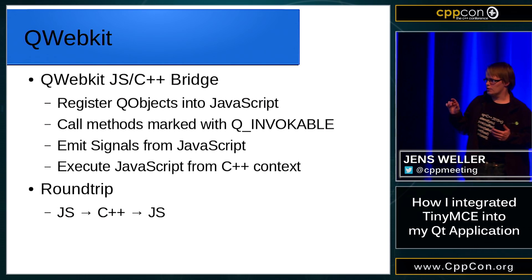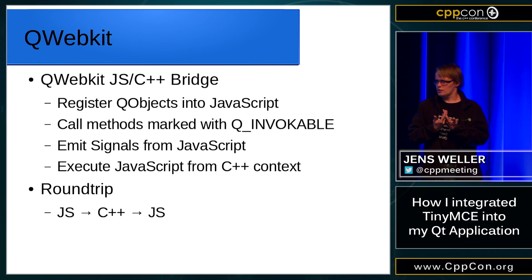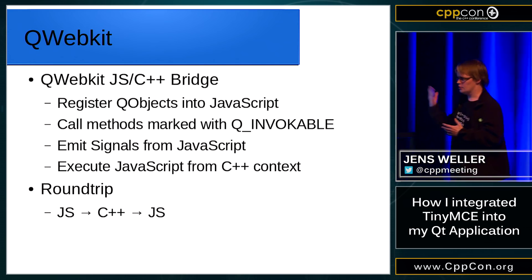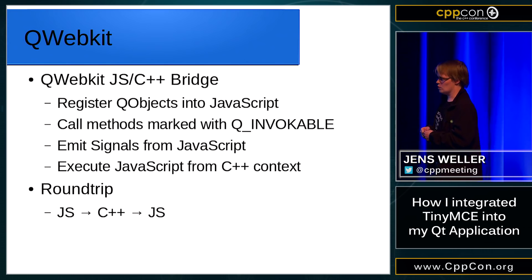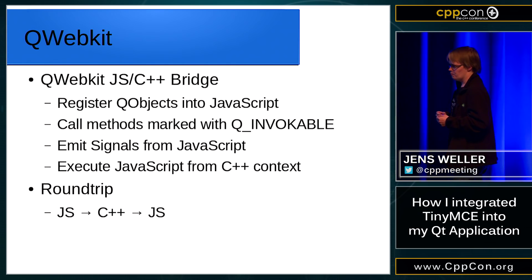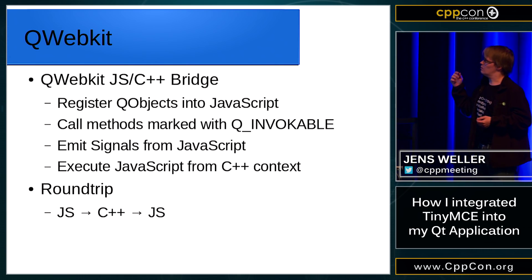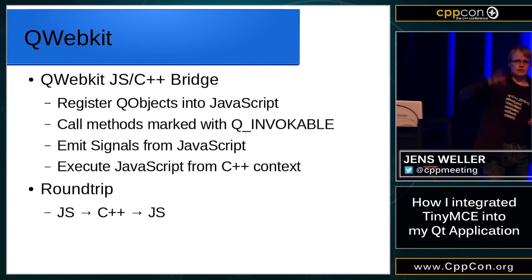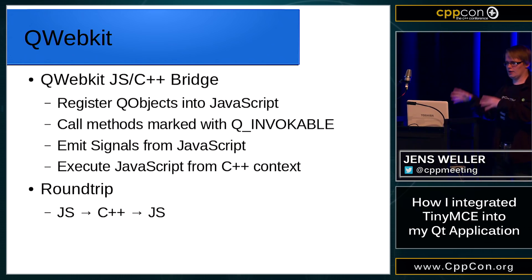From the QWebKit side, I can easily register the C++ object wrapping the editor into JavaScript. I can call methods into C++ that are marked with Q_INVOKABLE, or I can emit a signal from JavaScript which is then handled in Qt. I can also execute JavaScript from C++. This is very important when I want to display a dialog in C++ land and then execute JavaScript to return the result of that dialog to the editor — to display an image or change the HTML in the editor.